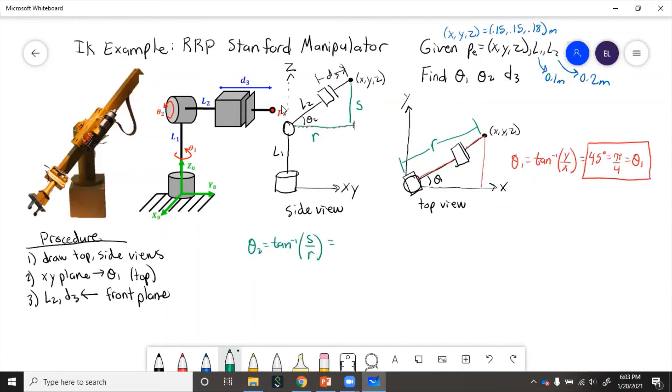Now s is going to be z, which is this height, minus L1, which is this height.